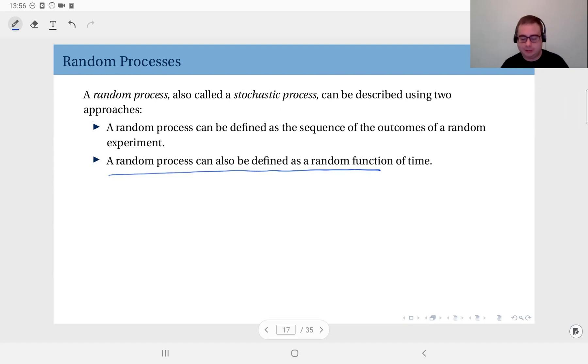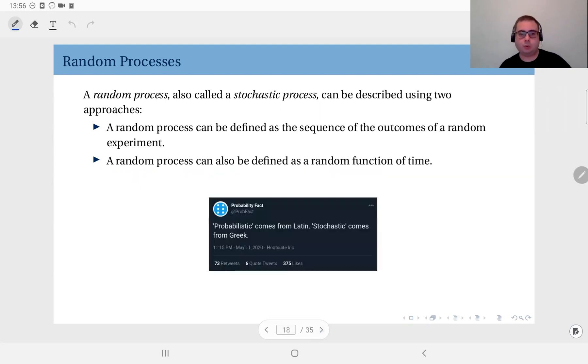And a little note on this name issue here, random process versus stochastic process. The etymology is the factor here. So you have probability, the word probability is derived from Latin, and the word stochastic, it comes from Greek. So they have the same meaning essentially. But if you like, you can use probabilistic or random, as opposed to stochastic.